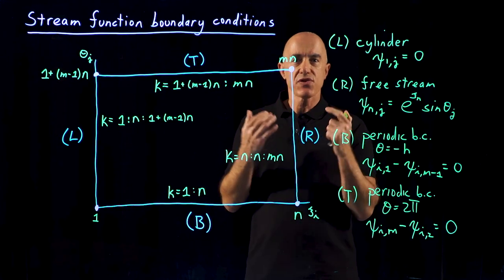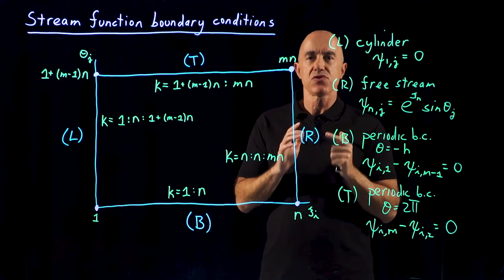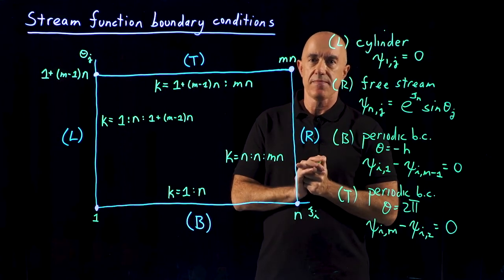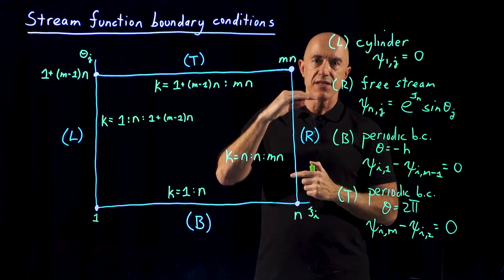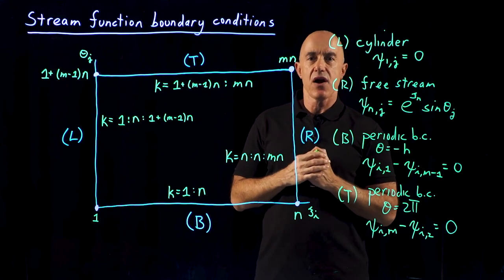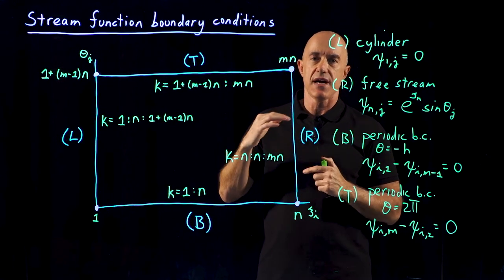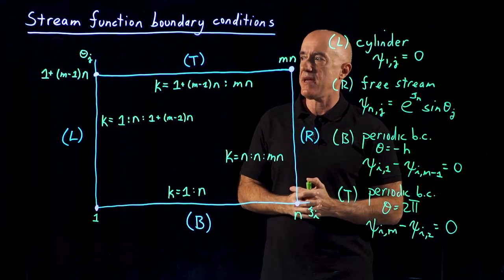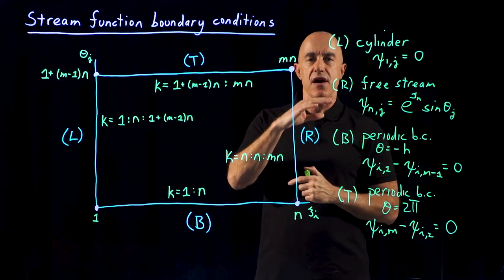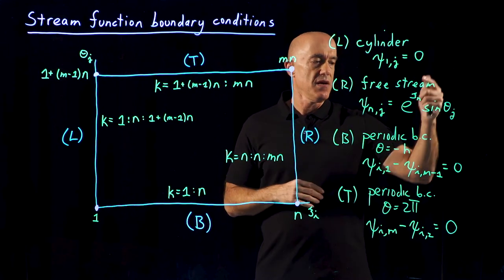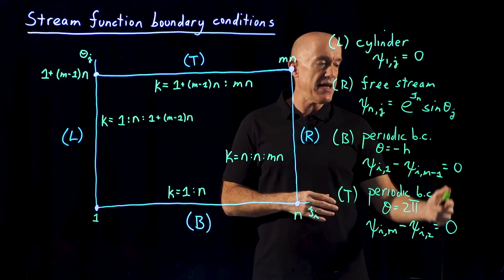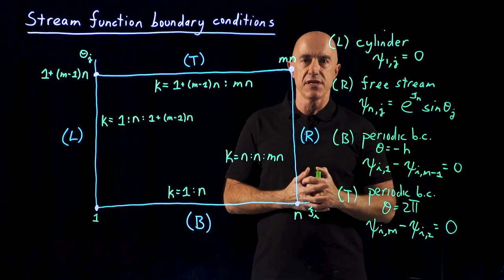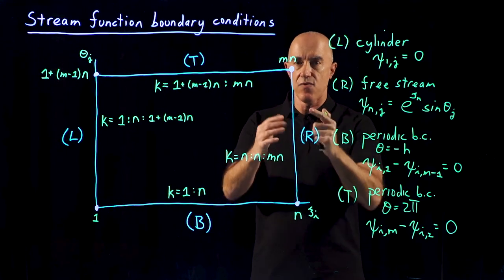So let me summarize. We're trying to put the boundary conditions into our equation A psi equals B. To do that, we need to replace rows of A by corresponding rows of the identity matrix or the difference between two rows of the identity matrix. We also have to replace the corresponding rows of B by 0 in the case of the homogeneous boundary conditions and by this free stream condition for the right-hand side.